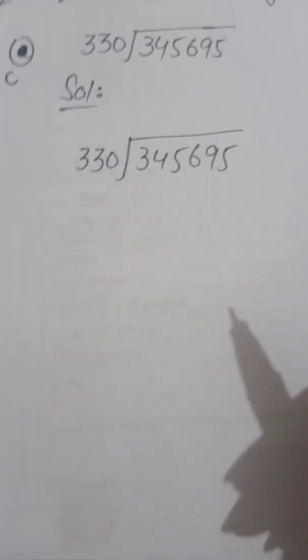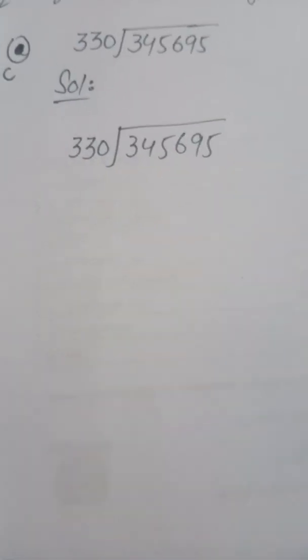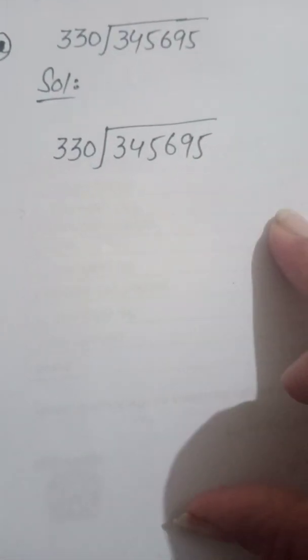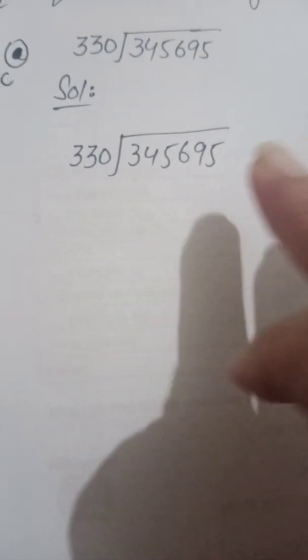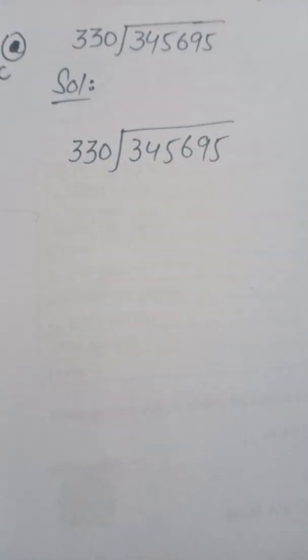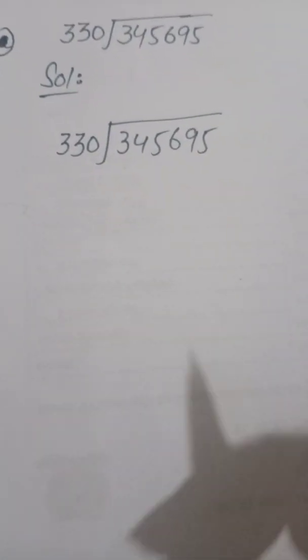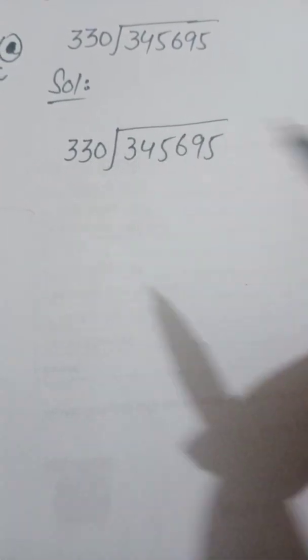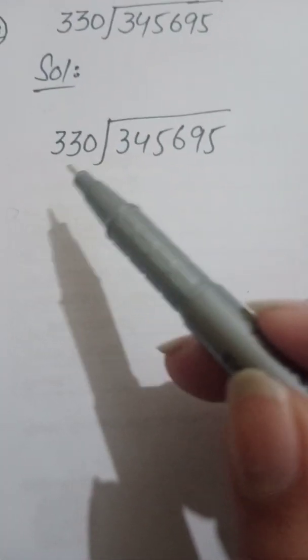This is grade 4. We have also learned that in division there are special names. The number inside the division bracket is the dividend and the number outside is the divisor. Since the divisor has 3 digits, we will also take 3 digits from inside: 345.